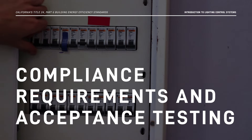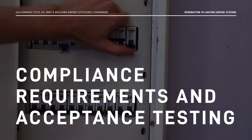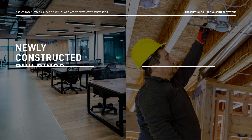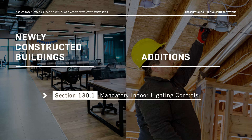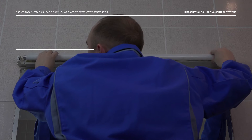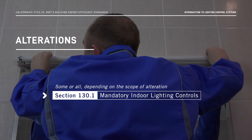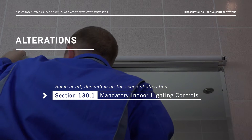Now that we've learned about lighting control devices and systems, let's go over a few requirements and review acceptance testing. For newly constructed buildings and additions, lighting controls installed to meet compliance with the energy code must also meet the mandatory requirements in Section 130.1. For lighting alterations, either some or all of the requirements in Section 130.1 may apply, depending on the scope of the alteration.